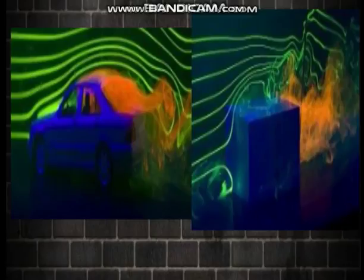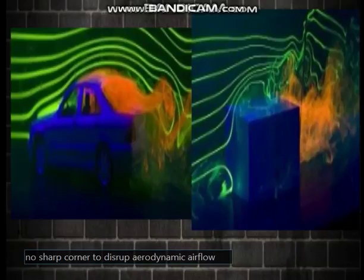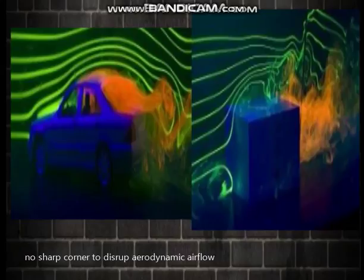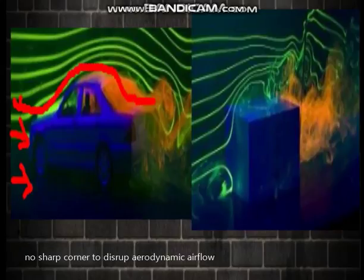Have you ever wondered why an aircraft fuselage cross-section is circular? It's basically for two reasons. First, it has no sharp corners to disrupt aerodynamic airflow. As we can see here, when air flows over a smooth surface, it flows nicely. But when there are sharp corners, the airflow is disrupted and causes swirling.